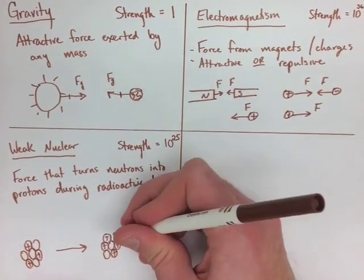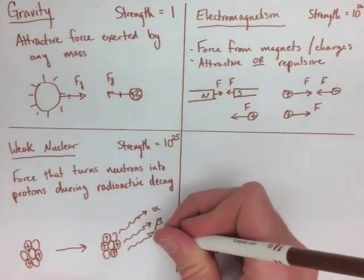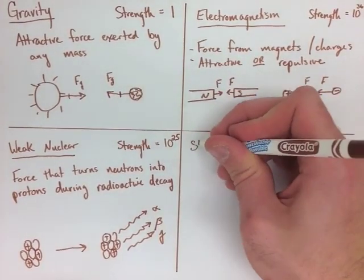we're then going to end up with four protons and three neutrons. This all takes place during alpha, beta, and gamma radioactive decay.